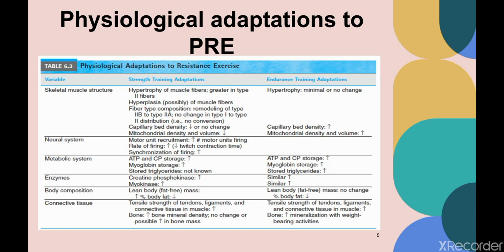Physiological adaptations to progressive resistance exercises are categorized into strength training and endurance training adaptations. For skeletal muscle structure, strength training causes hypertrophy of muscle fibers, greatest in Type 2 fibers. Endurance training shows minimal or no hypertrophy. Hyperplasia is seen with strength training, while capillary bed density and mitochondrial density decrease. In endurance training, capillary bed density and mitochondrial density both increase.